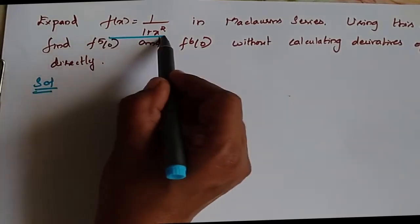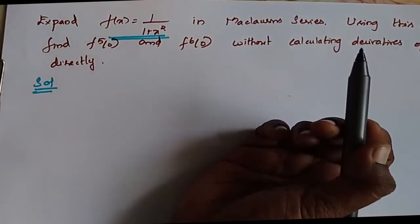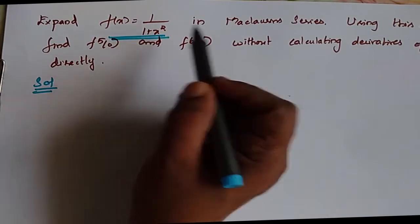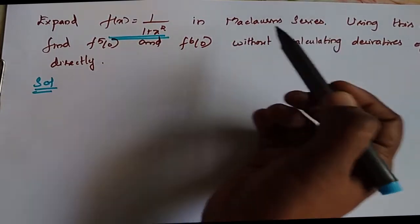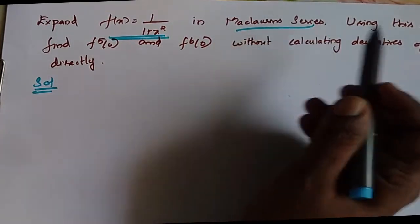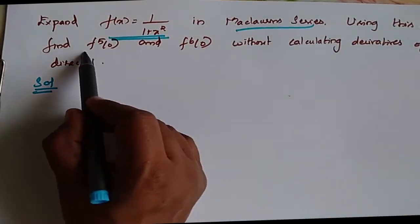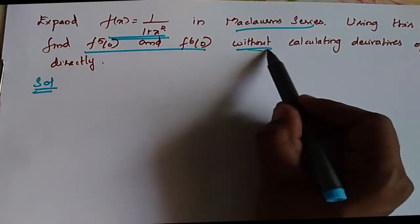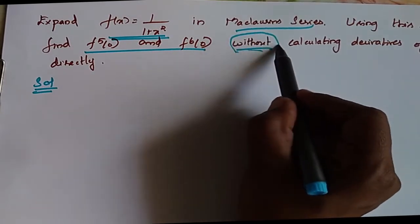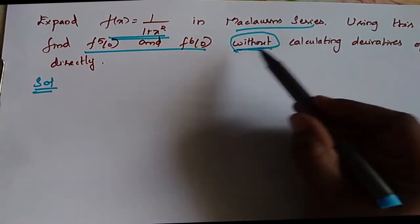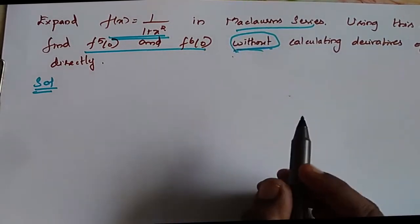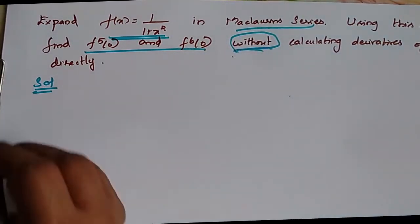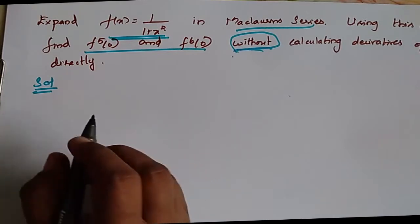Expand f(x) = 1/x + 1/(1+x²) in a McLaurin series. Using this series, find the result without calculating the derivatives.